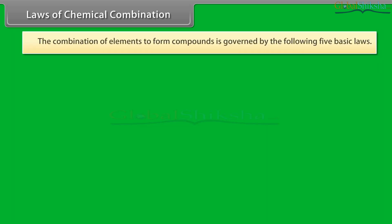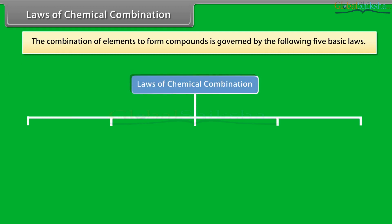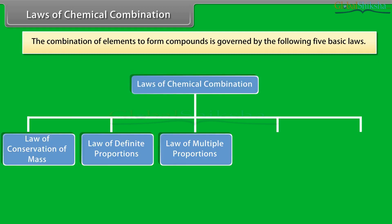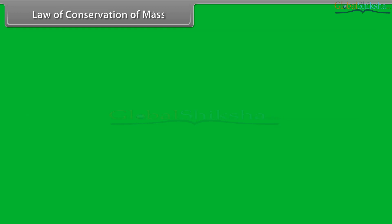Laws of chemical combination: the combination of elements to form compounds is governed by the following five basic laws. The first is the law of conservation of mass.